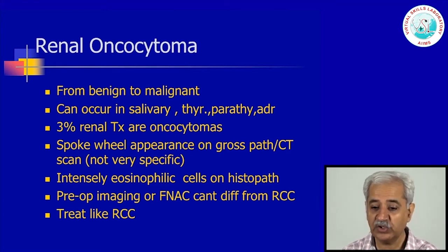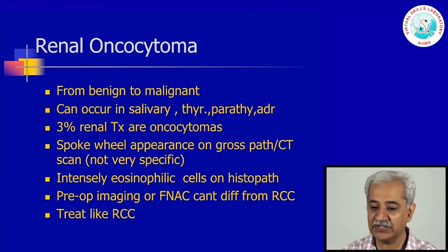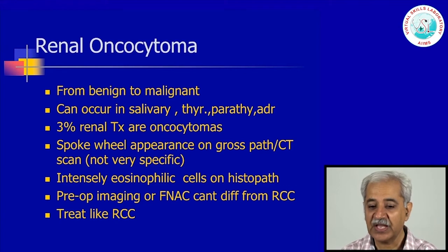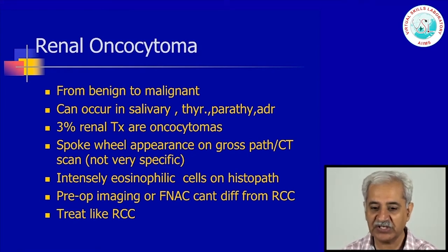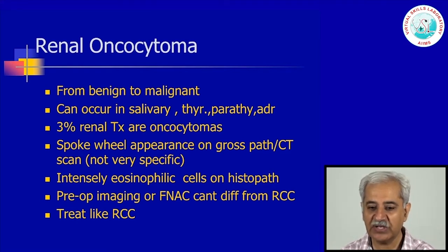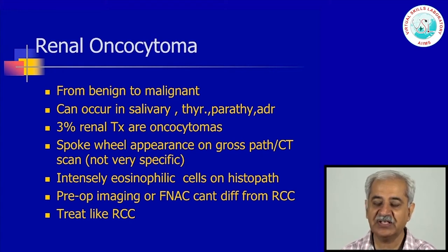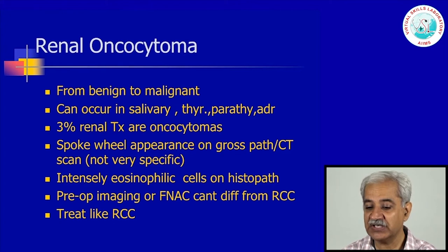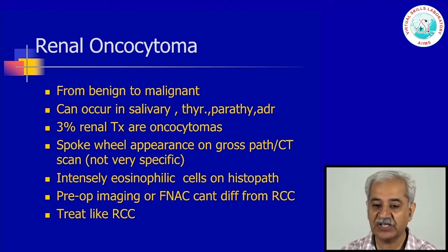Three percent of all renal tumours are oncocytoma. On gross pathology, there is a typical appearance known as a spoke wheel appearance, which can sometimes be appreciated on CT scan, but this is not very specific. Since in renal tumours the main clinical decisions are based on imaging, one may not be very certain whether it is a renal oncocytoma or a malignant renal tumour. The preoperative imaging or fine needle aspiration cytology cannot differentiate this from renal cell carcinoma, and therefore these tumours get treated like renal cell carcinoma.